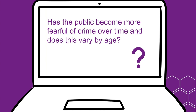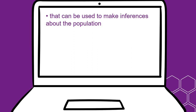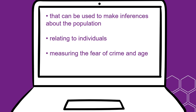For example, consider the following research question: Has the public become more fearful of crime over time, and does this vary by age? To answer this question, we need data that can be used to make inferences about the population — that is, a large representative sample — that relates to individuals rather than households or any other unit of analysis, that has measures of fear of crime and age, and that has the option to get data from different time points.